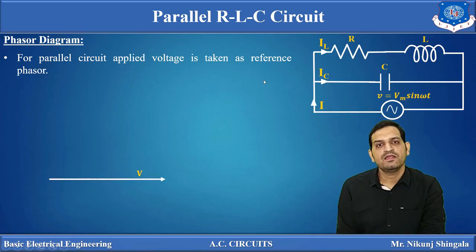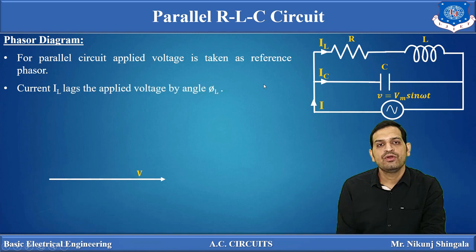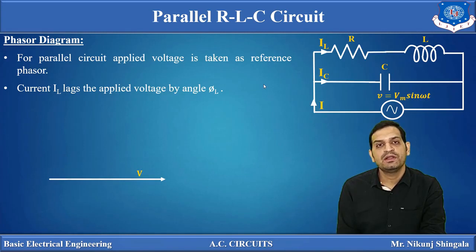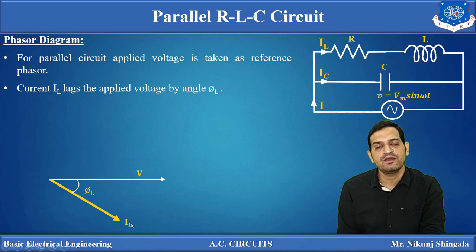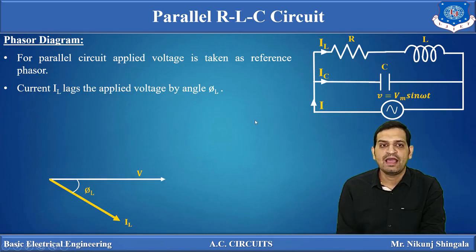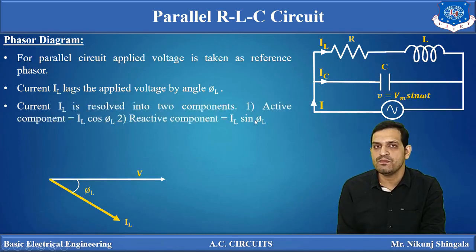IL, that is the current flowing through the inductive coil — current flowing through R and L. For an inductive RL branch, current lags behind the voltage, but it does not lag by 90 degrees; it lags behind the voltage by some angle φL. So IL will be in this particular direction, since phasors are drawn in the anti-clockwise direction, and this angle is φL. This is not 90 degrees because it is not a pure inductive circuit. IL is resolved into two components: active component and reactive component.